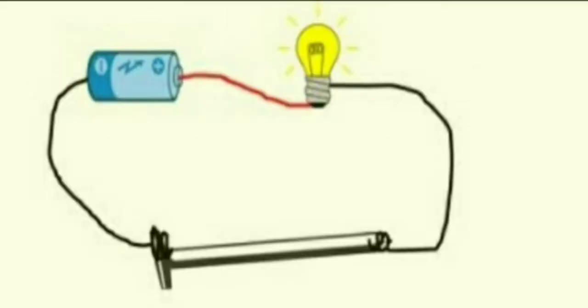When wood is placed, the bulb does not glow because it is wood. When iron nail is used, the bulb glows because it is made up of metal.